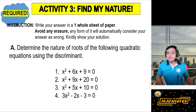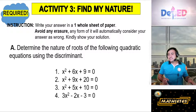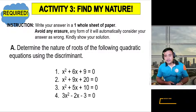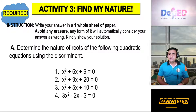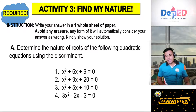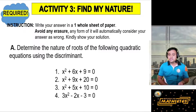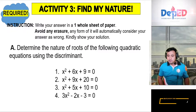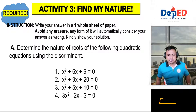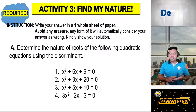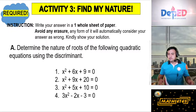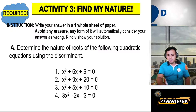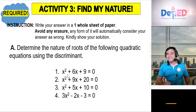Now for Activity 3 — this is the third activity you need to answer. If you haven't answered Activity 1 and Activity 2 yet, please do so and submit them. This activity is required. Write your answer on a one-hole sheet of paper. Avoid any erasure — any form of erasure will automatically count your answer as wrong.